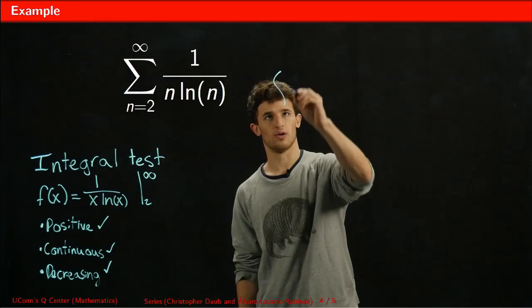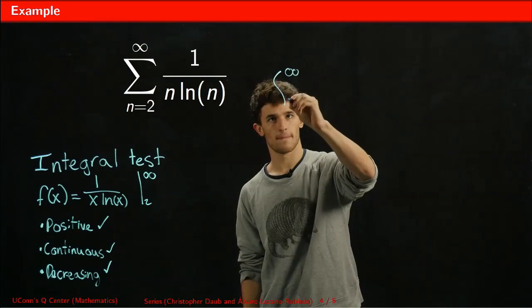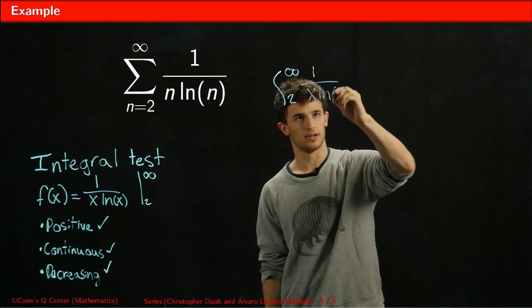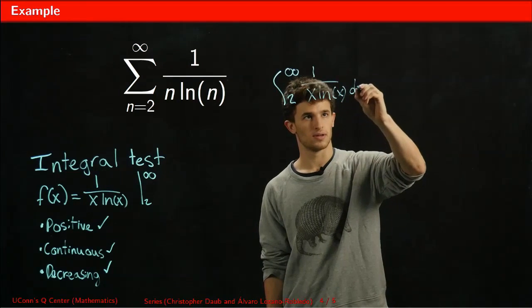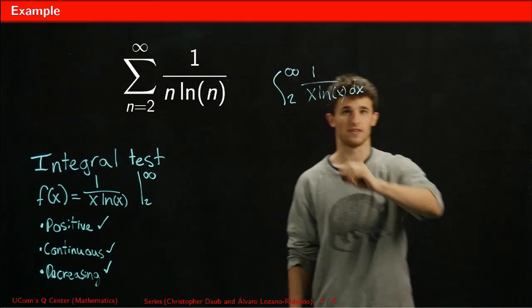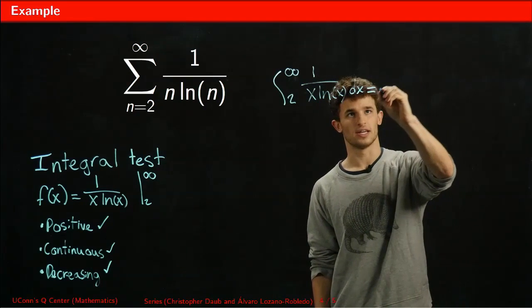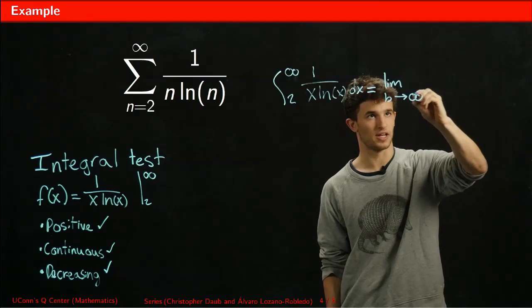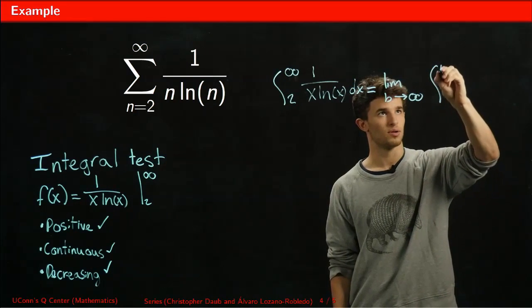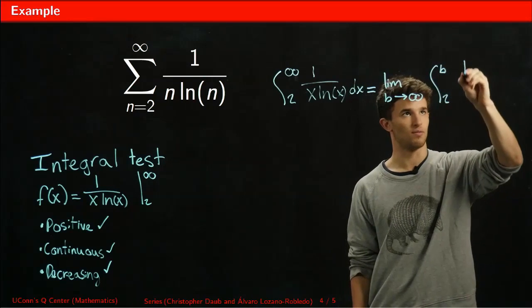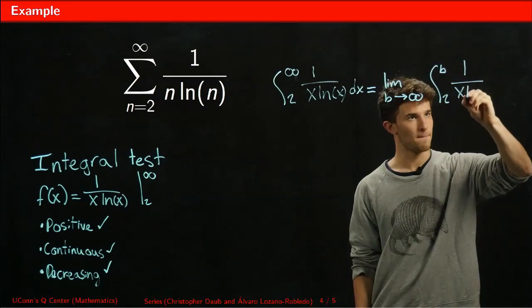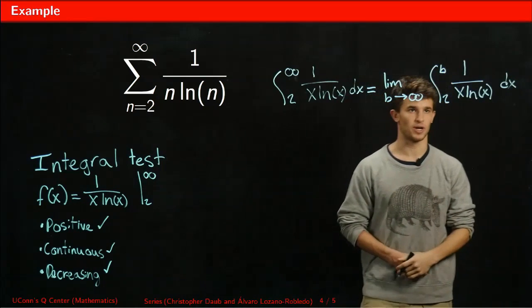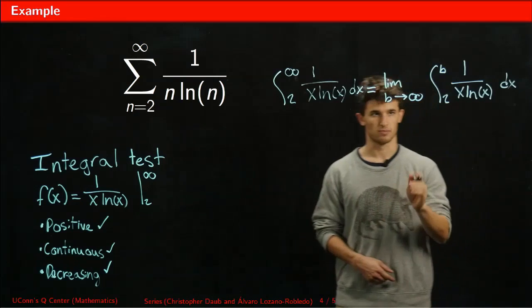We have the integral from 2 to infinity of 1 over x ln(x) dx as an improper integral. What we have to write it as is the limit as b goes to infinity of the integral from 2 to b of 1 over x ln(x) dx. That's what we're going to be integrating.